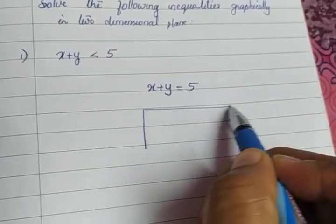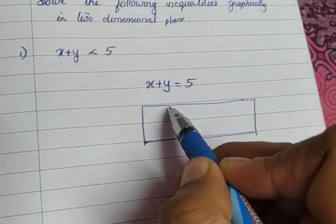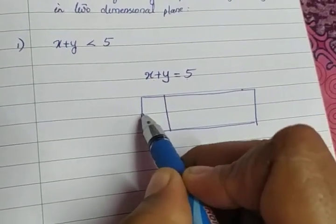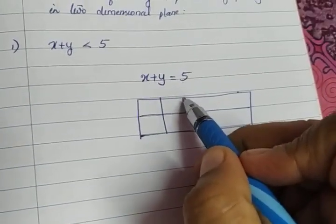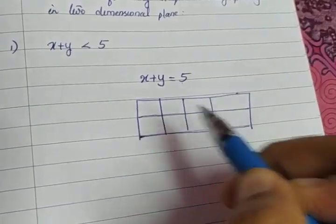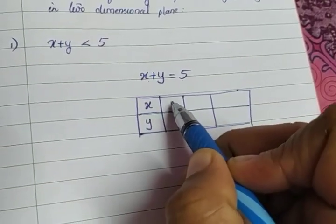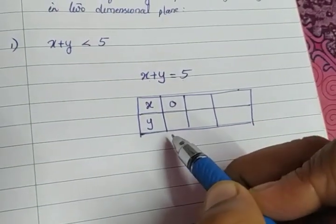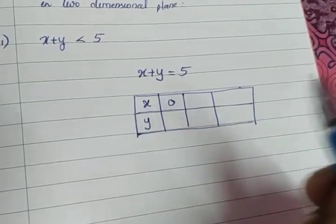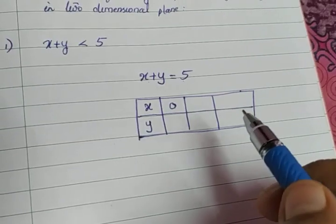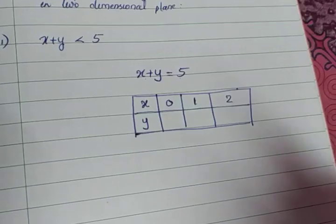To draw the graph of x plus y equal to 5, we will draw a table and mark x and y values. We will put values for x and find the corresponding y values. For drawing a line, we require only two points, but we will take three points. So I am taking the values of x as 0, 1, and 2.